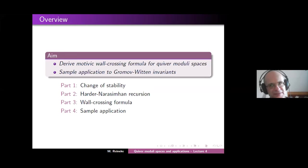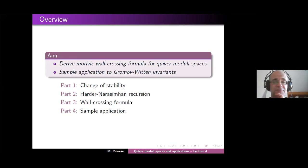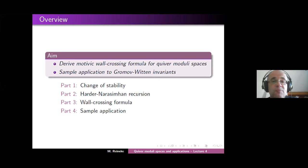Then we'll have another look at the Harder-Narasimhan recursion, which I also briefly explained on Monday at the end of the talk. From this, in the third part, we will derive this wall-crossing formula.